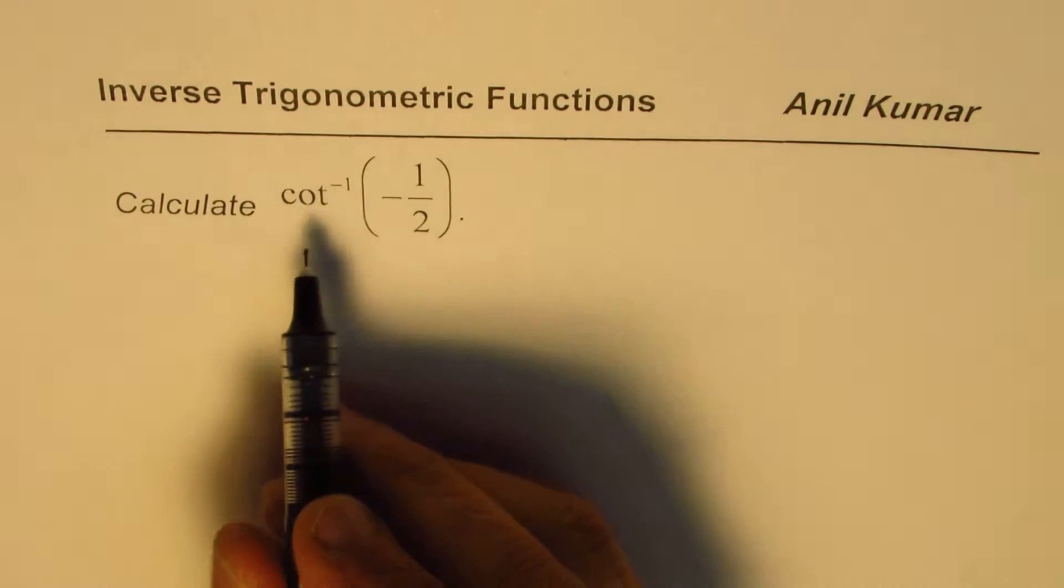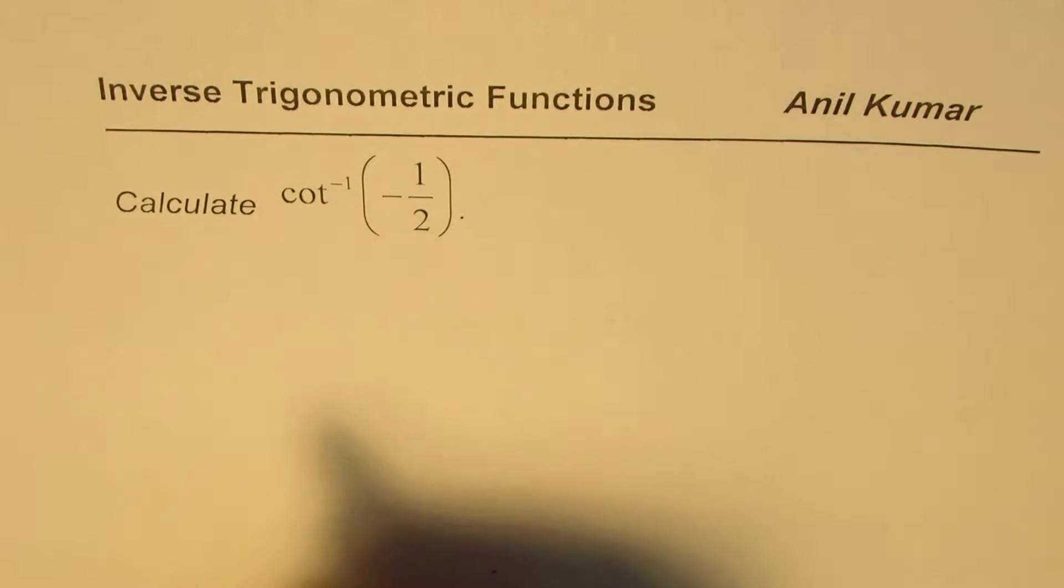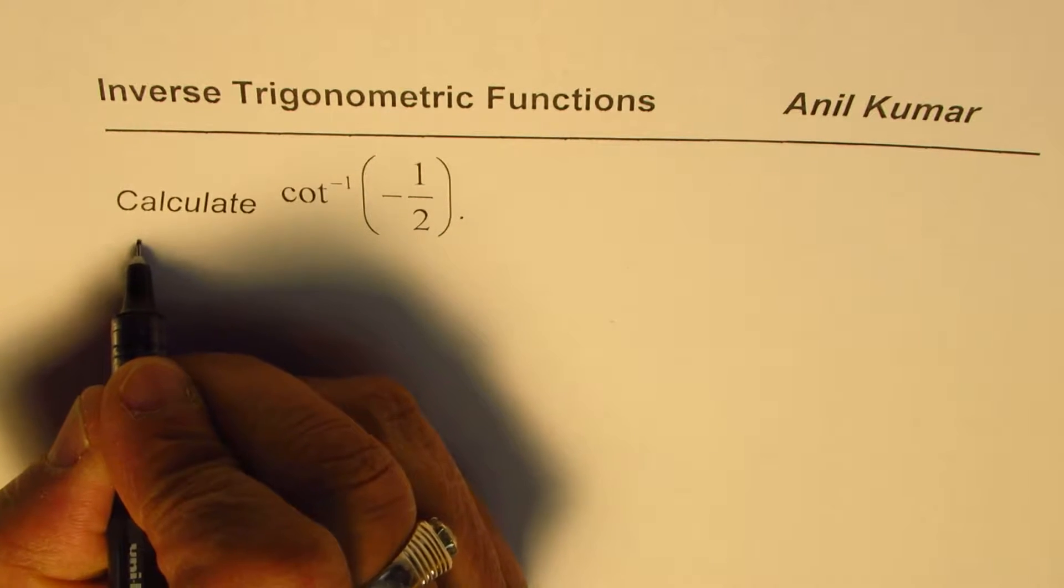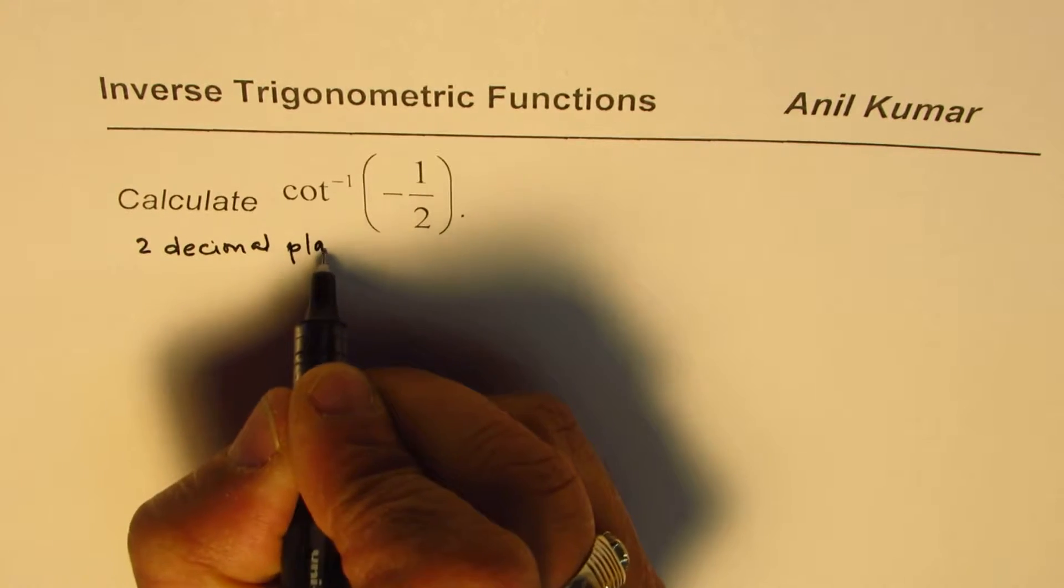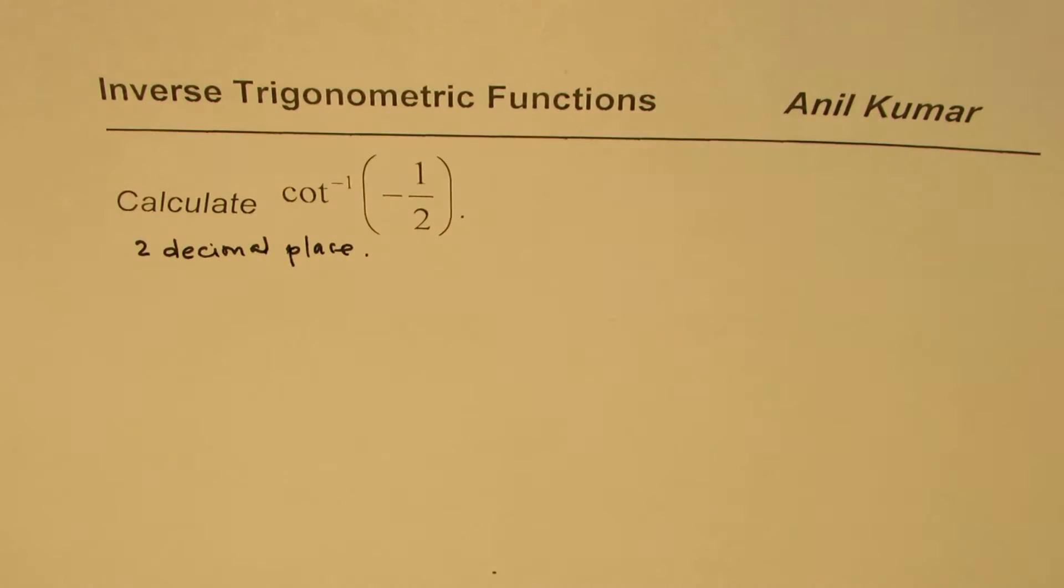The question here is calculate cot inverse of minus half. We'll approximate this to two decimal places. So we'll do up to two decimal places. That is a question for us.